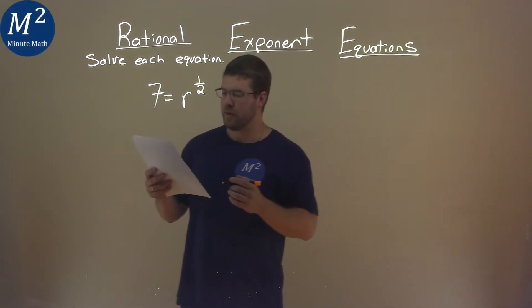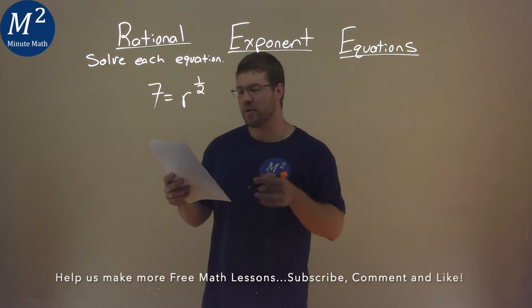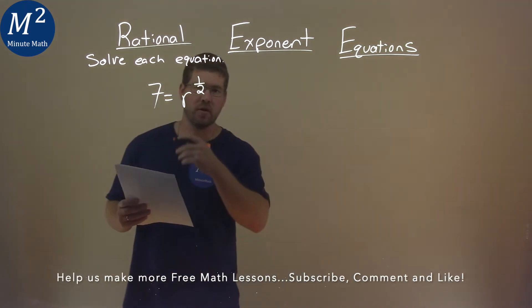We're given this problem right here. 7 equals r to the 1 half power, and we're going to solve this equation.